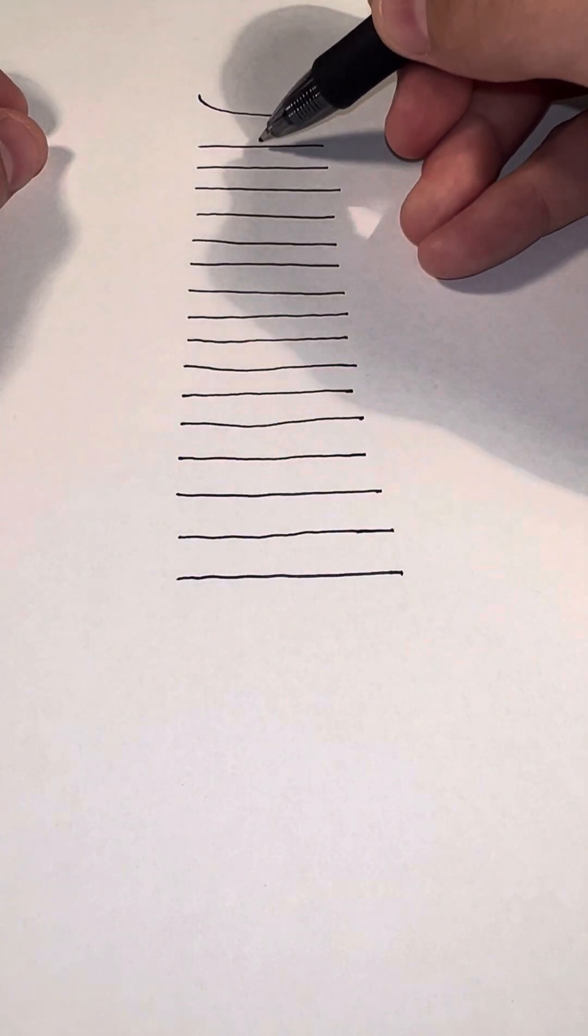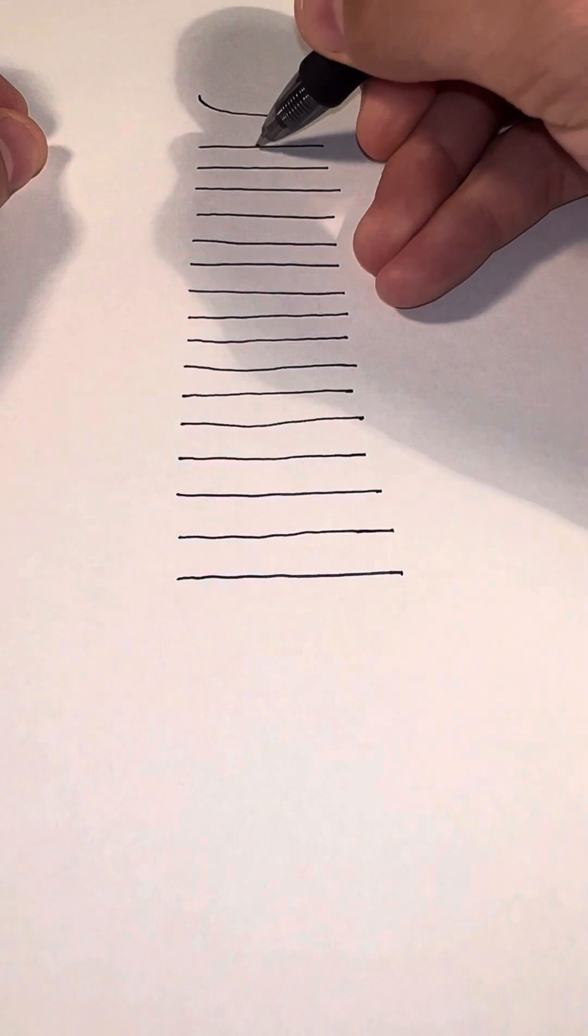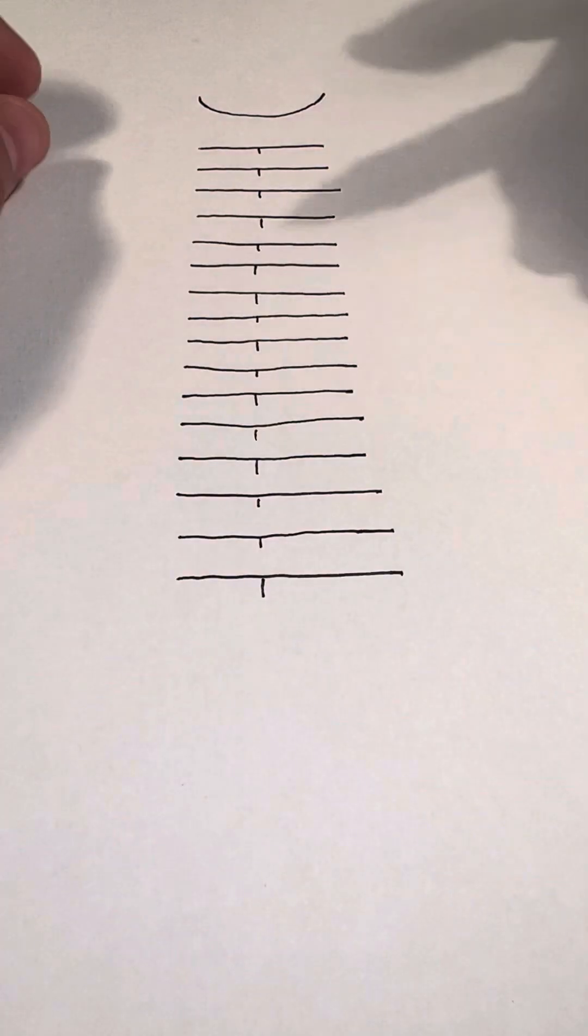Next, draw a little hash mark in the middle of each one of these lines. Finally, number all the levels.